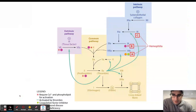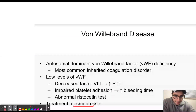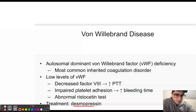The treatment for Von Willebrand disease is Desmopressin. Desmopressin stimulates Von Willebrand factor release from endothelial cells, and this is how Desmopressin helps with Von Willebrand disease.